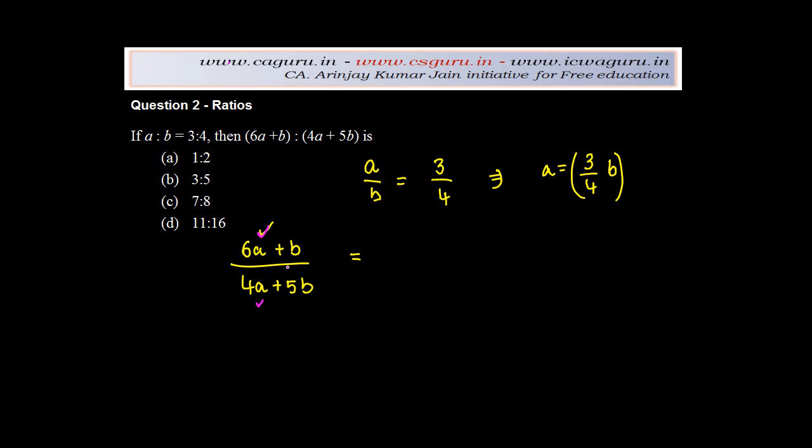Or the other way you can look at it is, if I have to convert these a and b variables as a upon b, can I try and put somehow b over here? But I can't put one single b over here. What I need to do is divide the entire numerator by b and also divide the entire denominator by b.